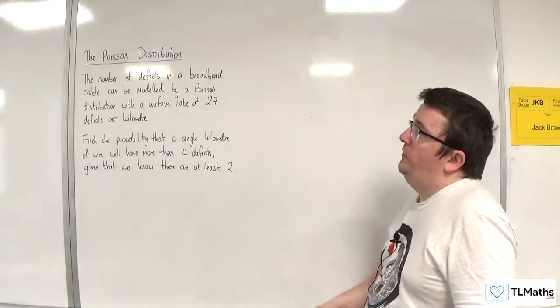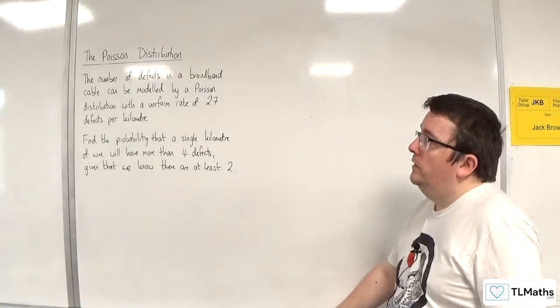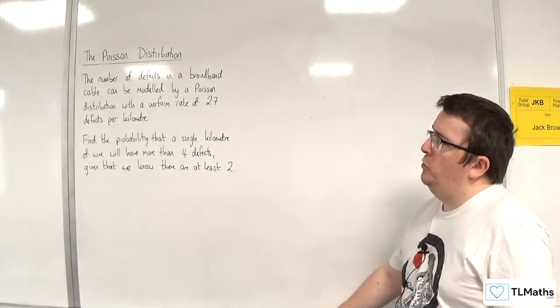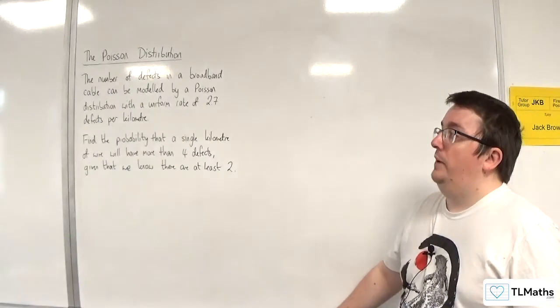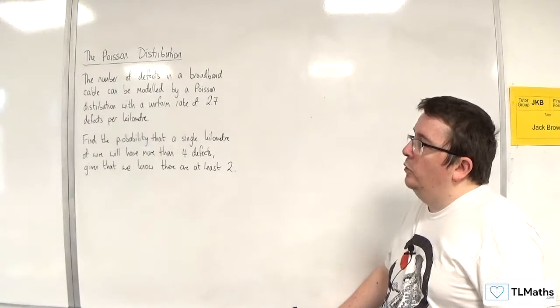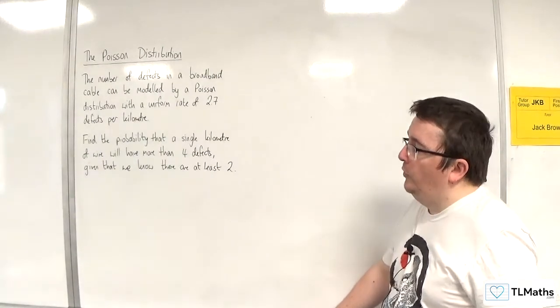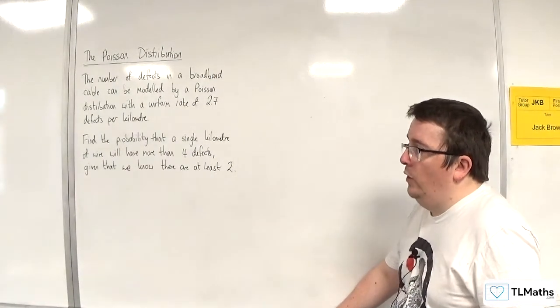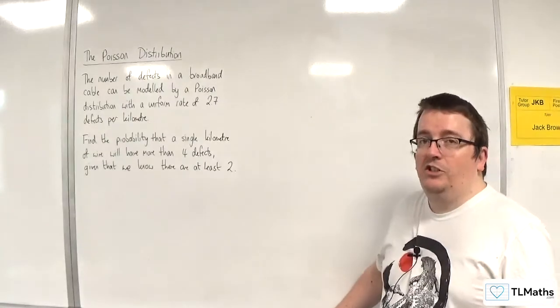In this problem, we've got the number of defects in a broadband cable that can be modeled by a Poisson distribution with a uniform rate of 2.7 defects per kilometer. Find the probability that a single kilometer of wire will have more than four defects, given that we know that there are at least two.